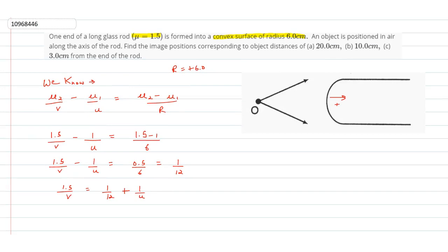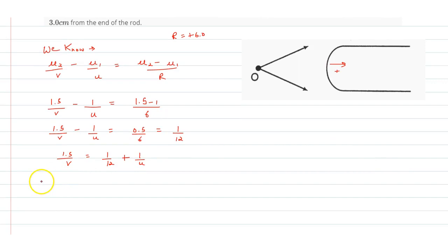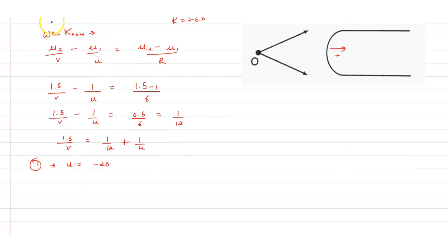Now, let's add value to u. U is equal to minus 20, minus 10, and minus 3. So, in the first case, when u is equal to minus 20, we will solve it.